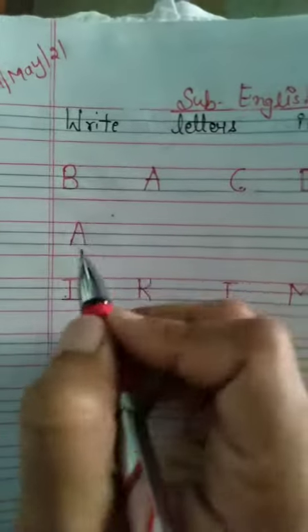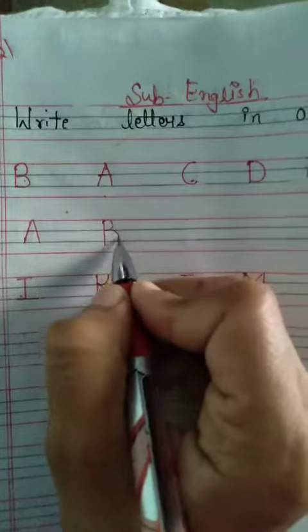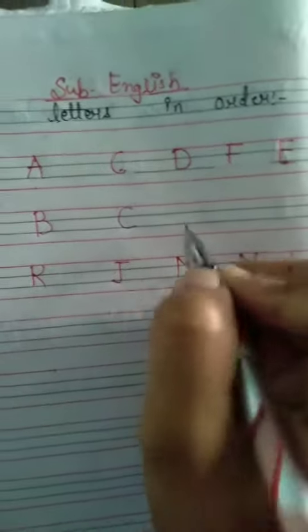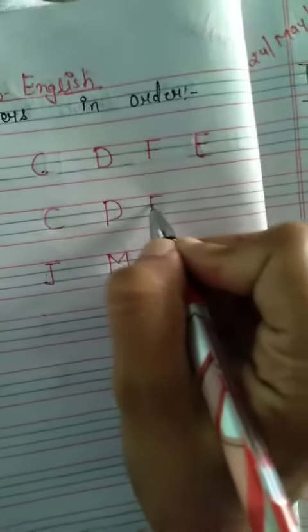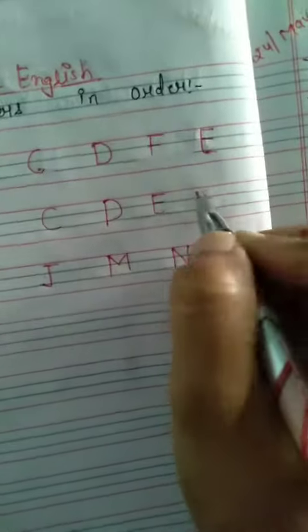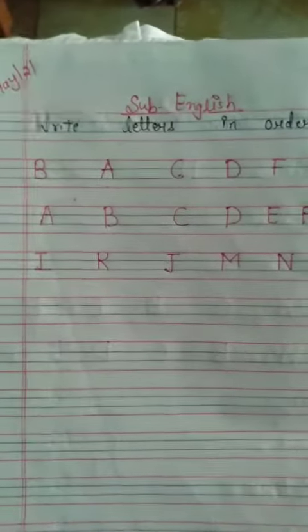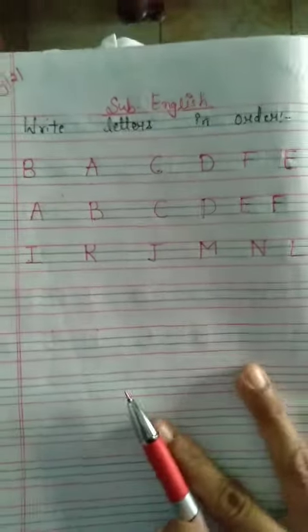B — okay. After B, C will come. After C, D will come. After D, E. And after E, F. Simple — you have to write the alphabets just in sequence order. This is the way of writing.